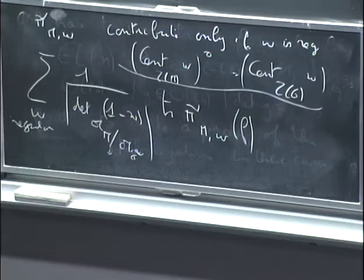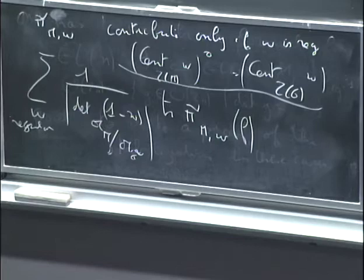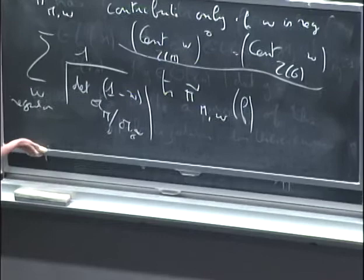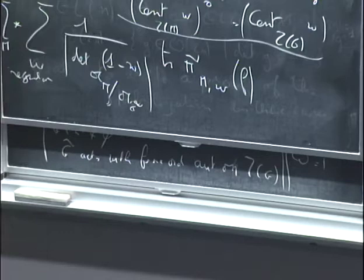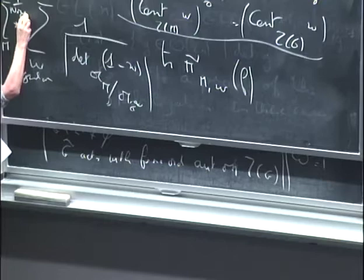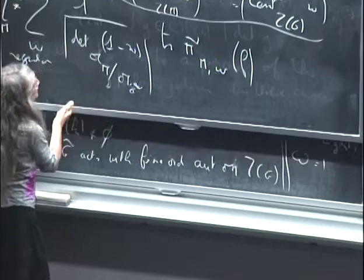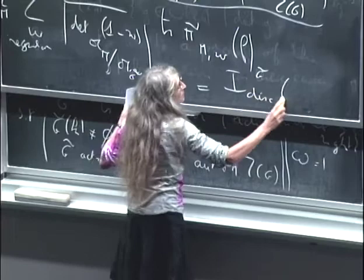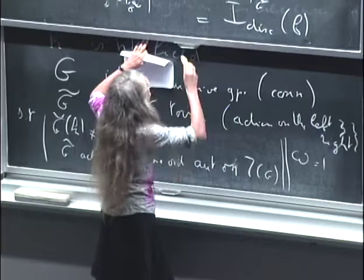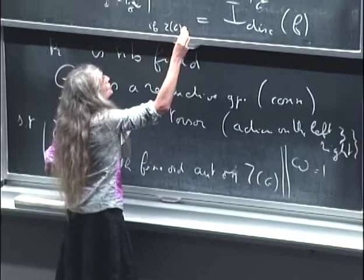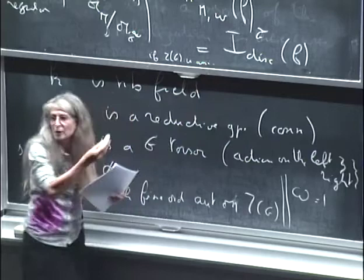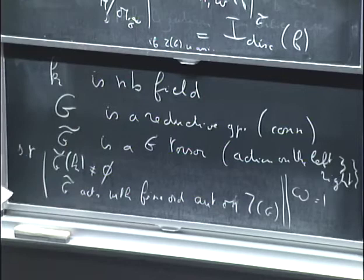So, F is a test function as usual. The discrete part of the trace formula is a sum over M, with a coefficient which is a normalization factor. This is not totally true — there is a problem only when J is anisotropic. There is a problem with the center, which I will explain later, because the problem appears in the continuous part.